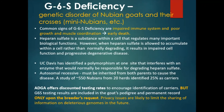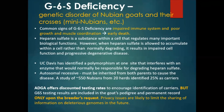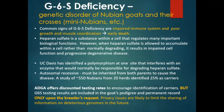The American Dairy Goat Association (ADGA) offers discounted testing rates to encourage the identification of carriers, but G6S testing results are included in the goat's pedigree and permanent record only upon the breeder's request. Privacy issues are likely to limit the sharing of information on deleterious genomes in the future as well.